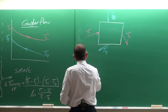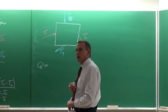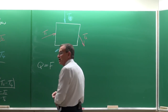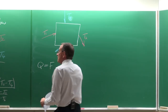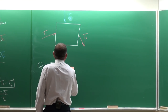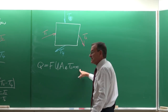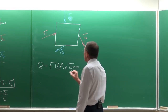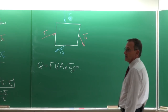As engineers we think about how we can work around this. For another type of heat exchanger we are going to use a correction factor F, so that: Q = F × U × A × LMTD, where the LMTD is calculated as if it is a counter flow heat exchanger.